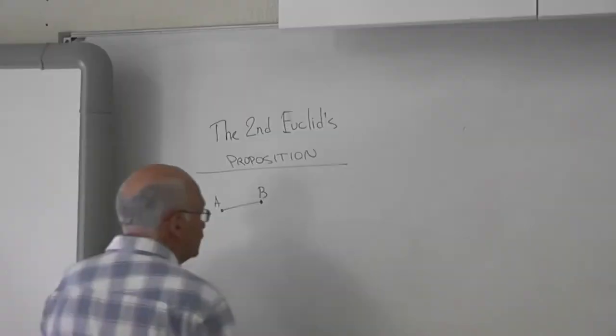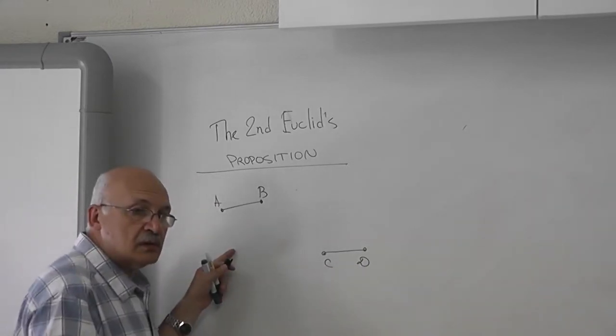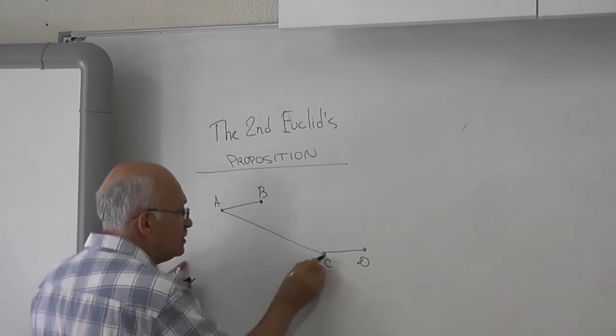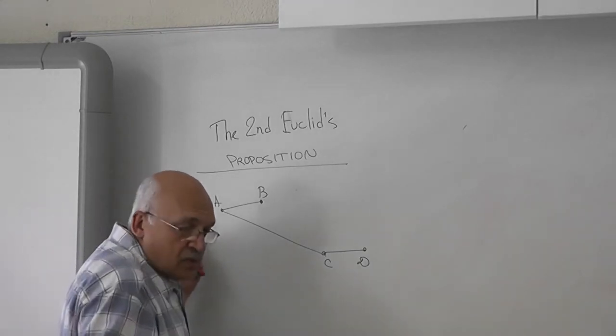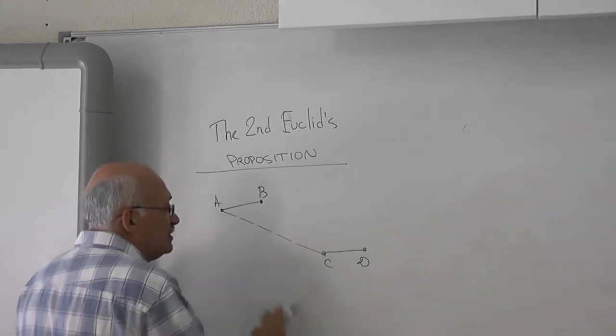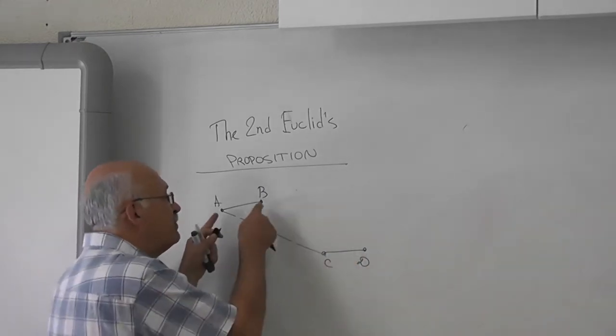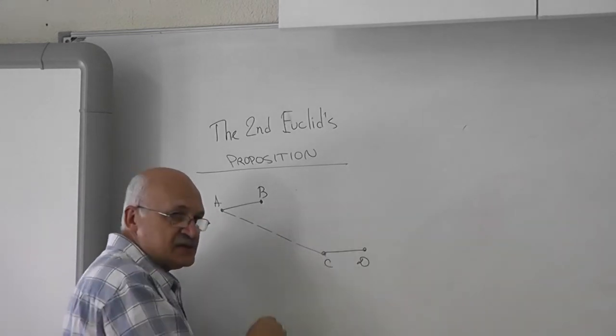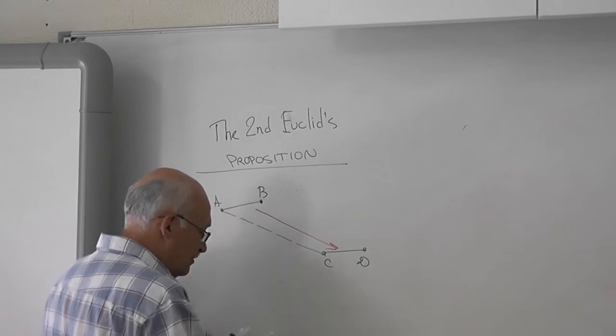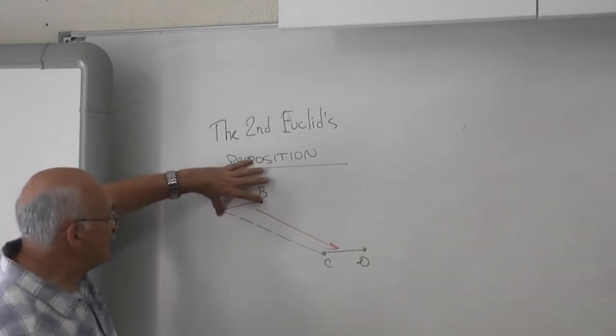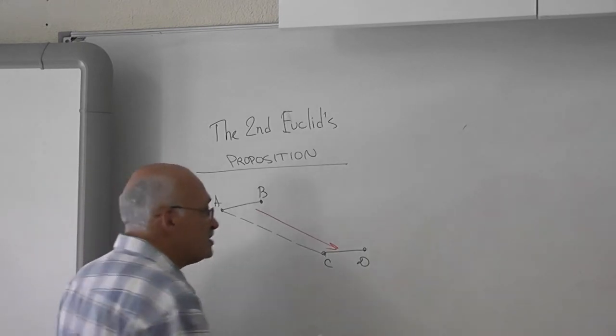Pollard suggests to draw a segment which is equal and parallel to AB. So, such a segment CD is obtained from AB by what transformation? Параллельный перенос. You know this. In English, параллельный перенос is translation.